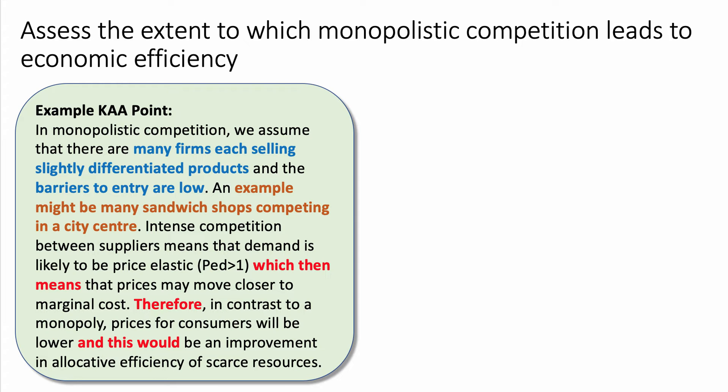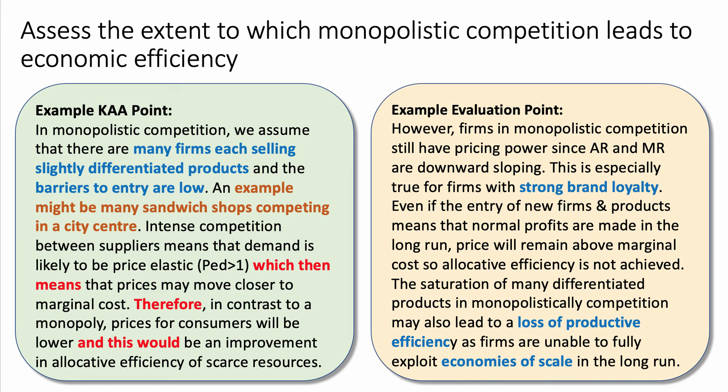Firms are not going to rip consumers off; they have to price quite close to the marginal cost of supply. Therefore — another connected phrase — in contrast to a monopoly, prices for consumers will be lower, and this would be an improvement in allocative efficiency of scarce resources. Good use of connected phrases, a clear definition of monopolistic competition, and a link with elasticity of demand — a solid KAA point.